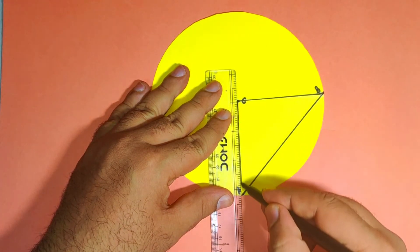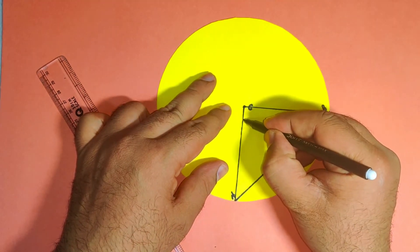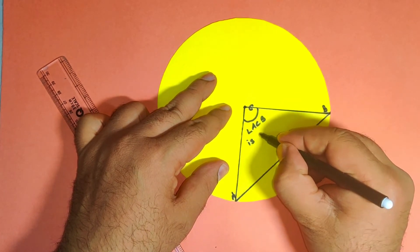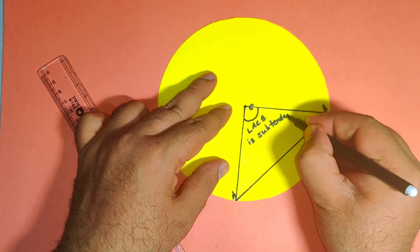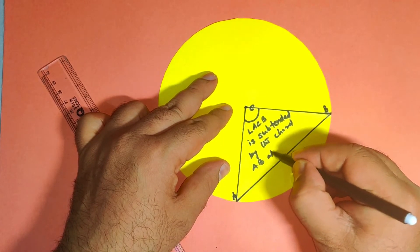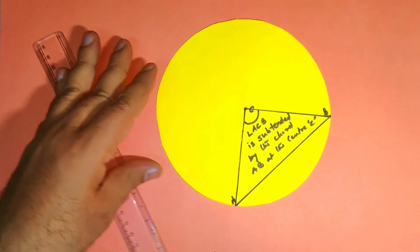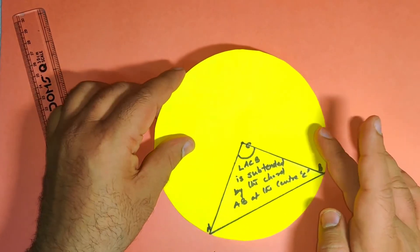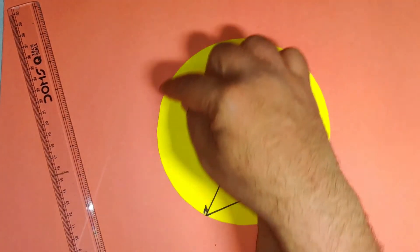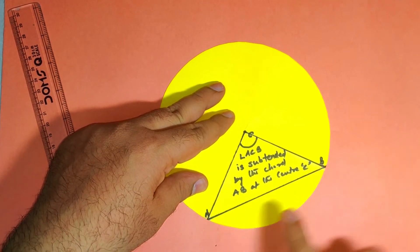You can see that angle ACB is the angle subtended by the chord AB at the center C. I hope this is clear. Now in the next part, I will use the same circular sheet to create an angle subtended by this chord AB at any point on the remaining part of the circle, which we also call the minor arc.